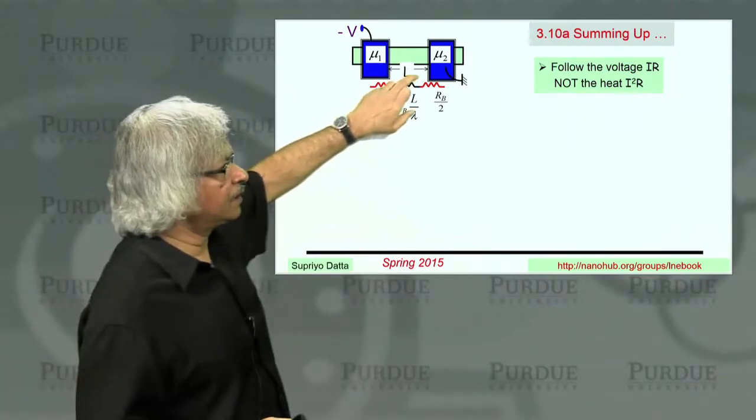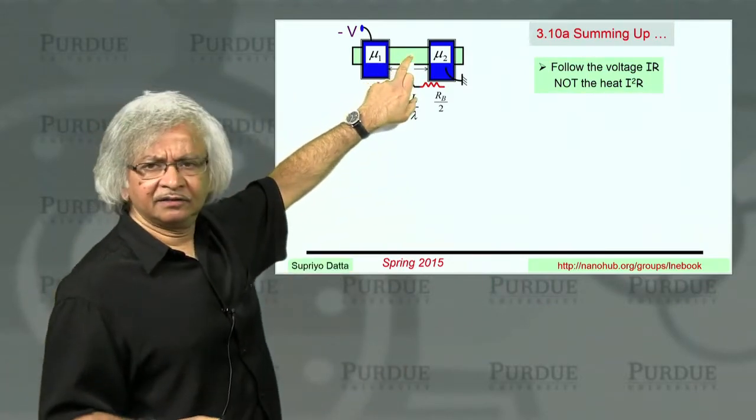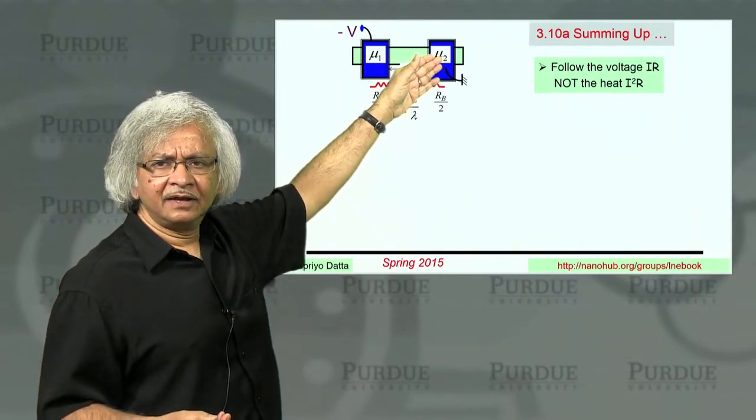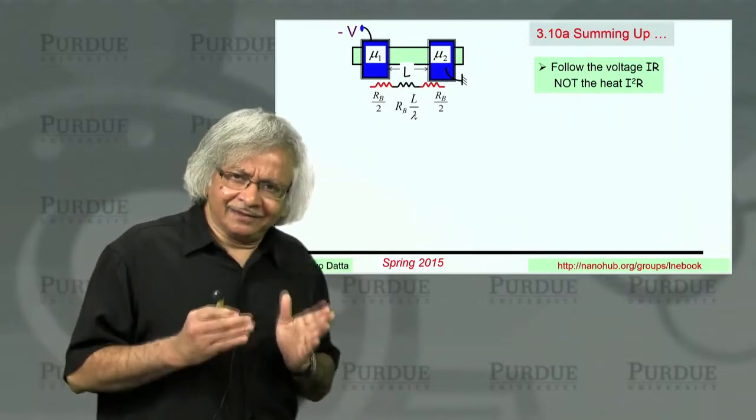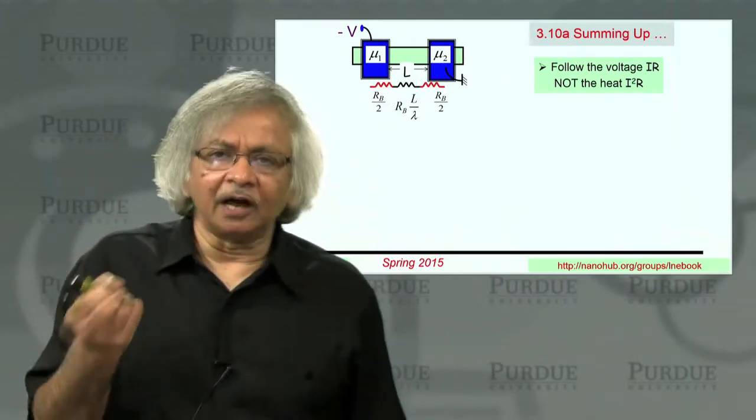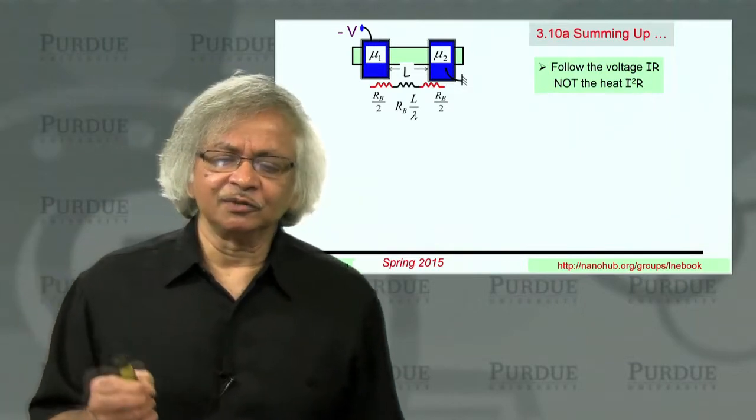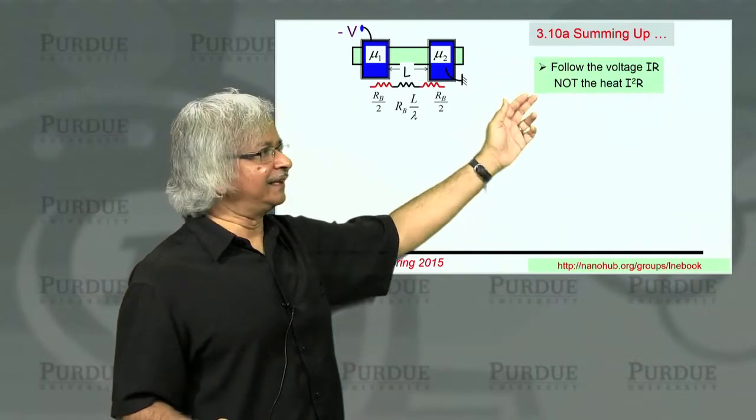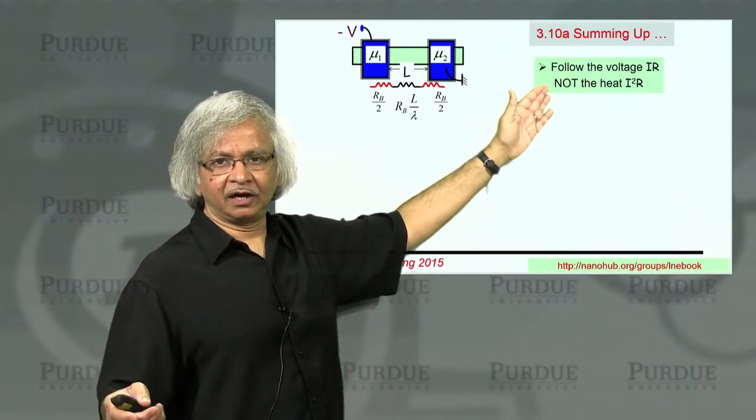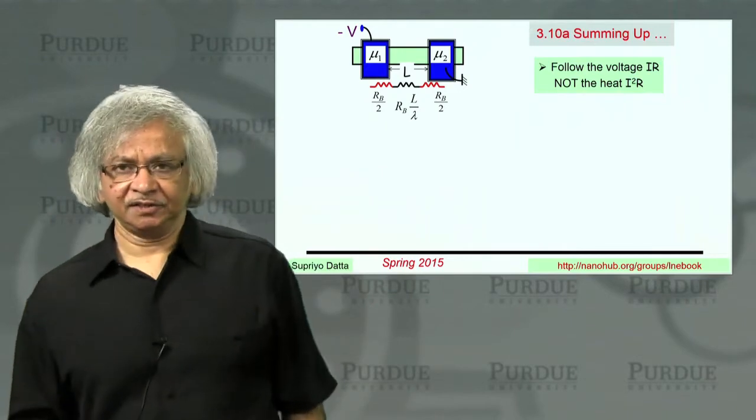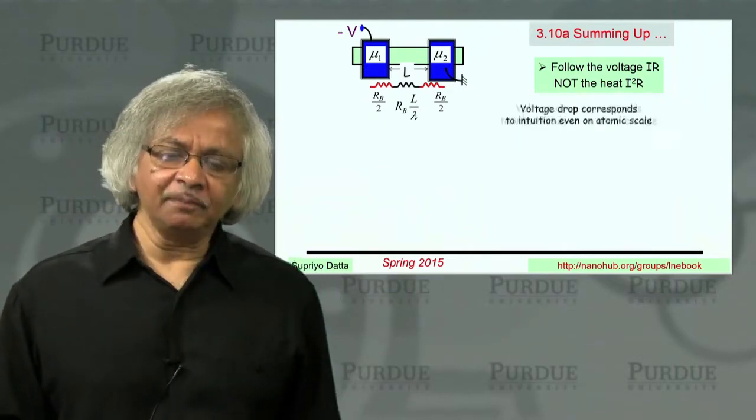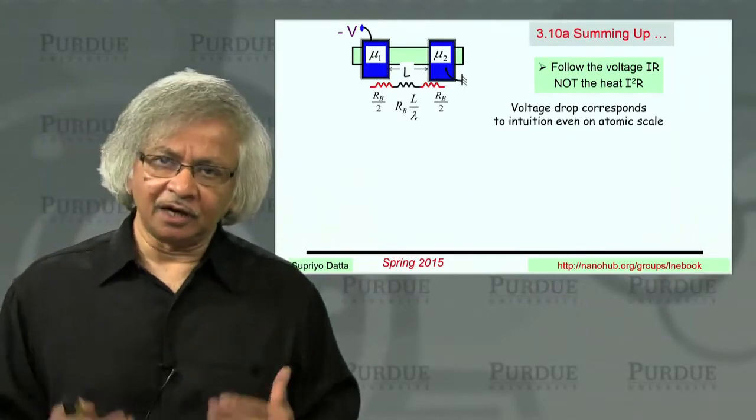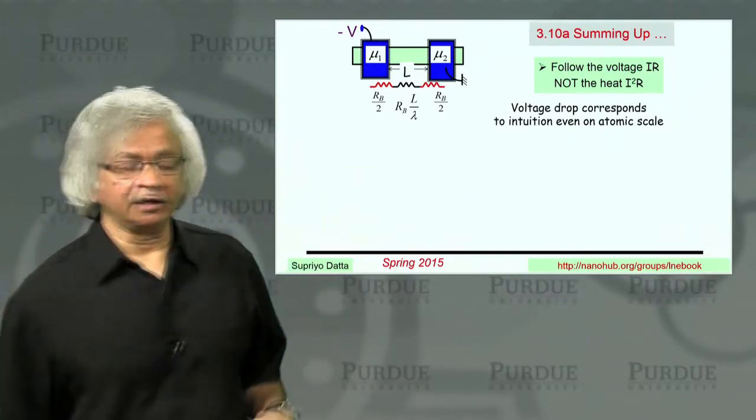But then we all have an intuitive feeling that resistance is associated with obstacles. That is, if we put a little hole in here, the resistance should go up because electrons will have a tough time getting across it. So if you want a criterion, something that lets you see where the obstacles are, then it's important to follow the voltage or the IR drop rather than the heat, which is I squared R. Because that voltage drop corresponds to this intuition about resistance being associated with obstacles, even on an atomic scale.